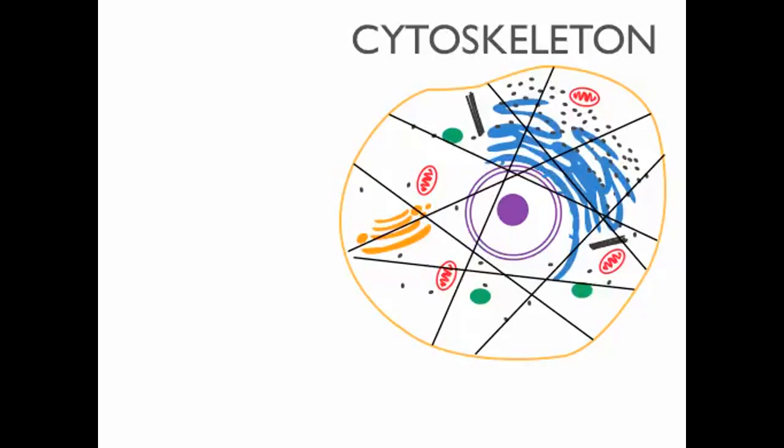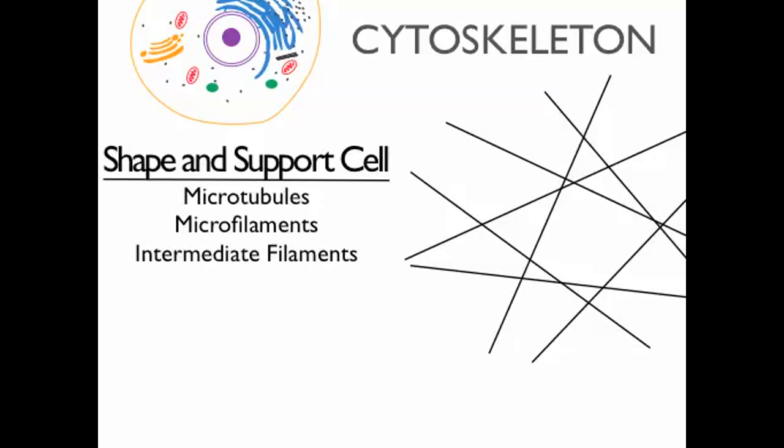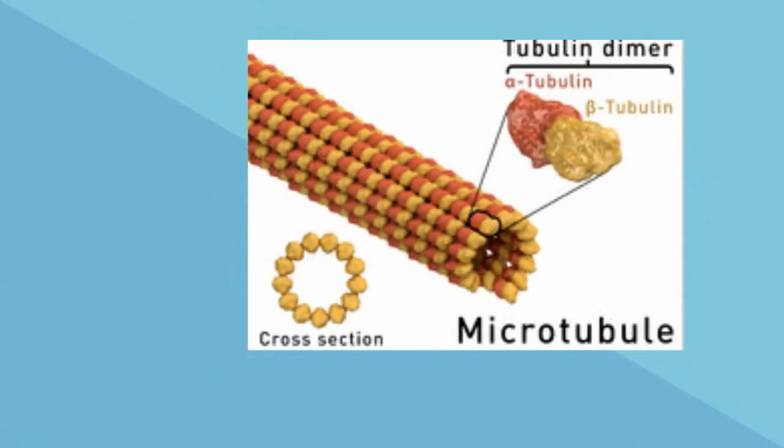The cytoskeleton is made up of three types of protein fibers.